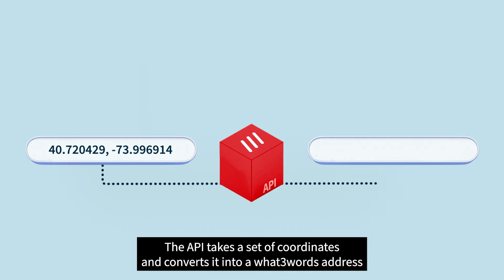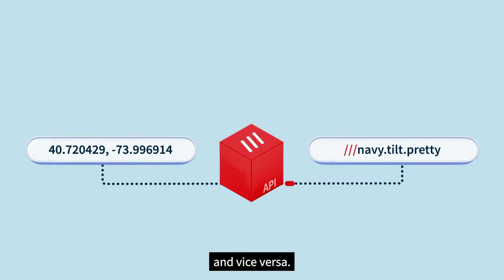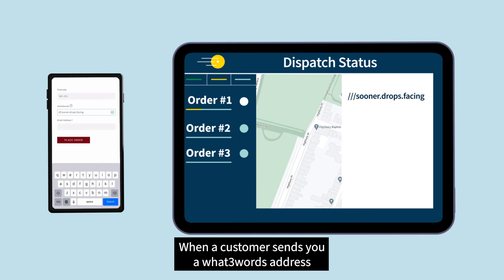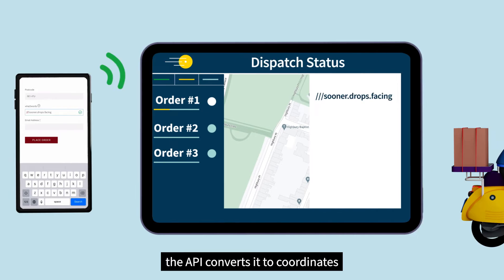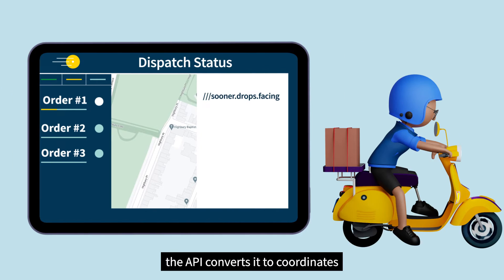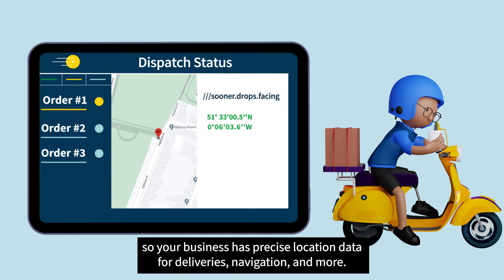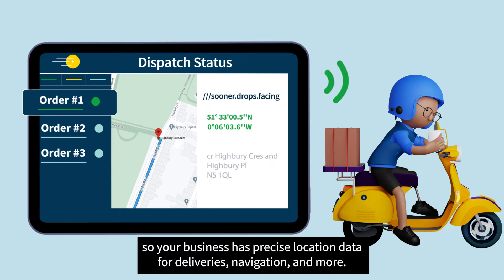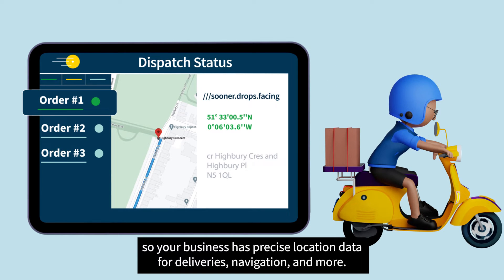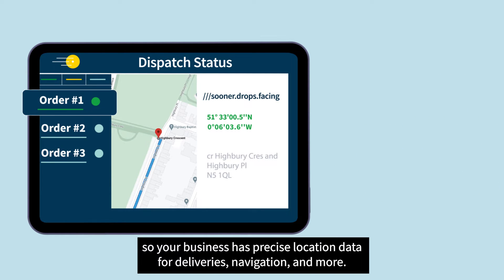The API takes a set of coordinates and converts it into a What3Words address and vice versa. When a customer sends you a What3Words address, the API converts it to coordinates, so your business has precise location data for deliveries, navigation and more.